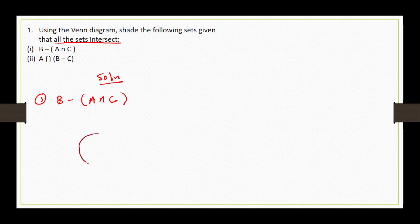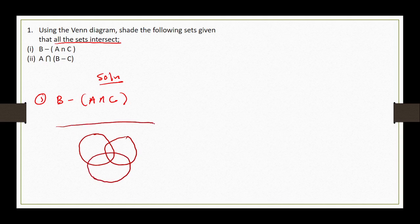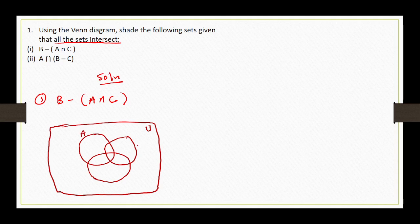Since they are all intersecting, I can easily come up with a Venn diagram where set A is intersecting with set B, and set B is also intersecting with set C. I also have to take note that we have the universal set, which I represent with a rectangle. So this is our universal set, this is set A, this is set B, and this is set C.